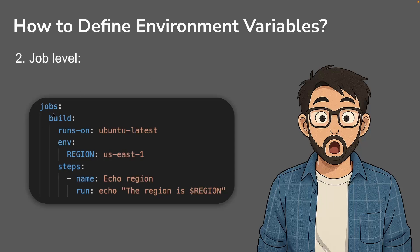The next level is at the job level. You can add environment variables inside a specific job. This environment variable will be accessible to all the steps in that particular job, but if there is a step that is part of a different job, then this environment variable will not be accessible there.